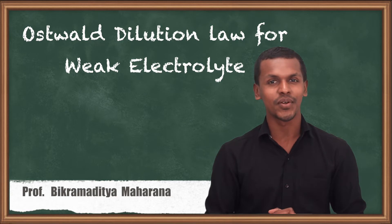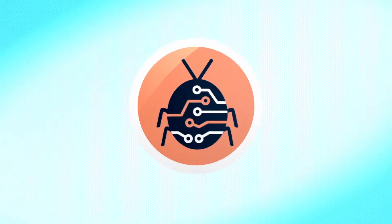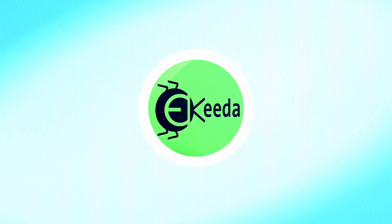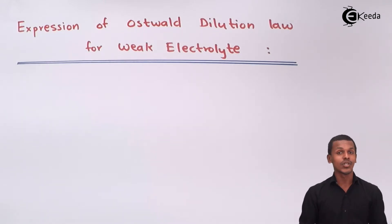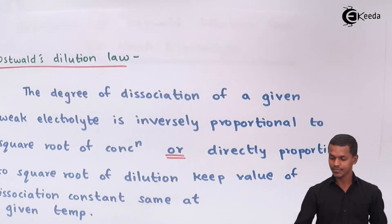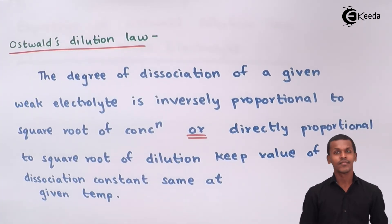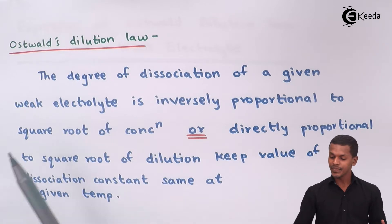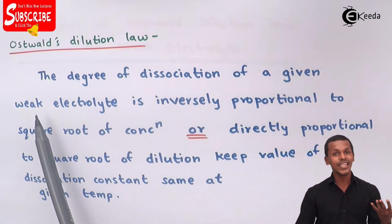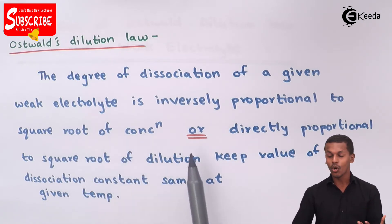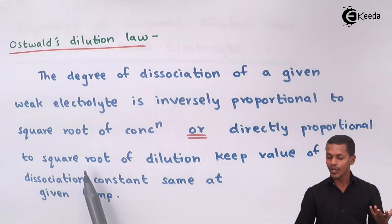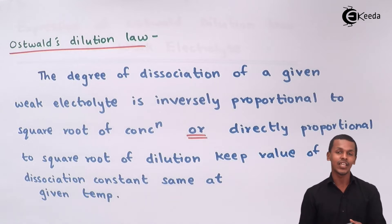But what is actually Oswald Dilution Law? So let us learn about this in this section. The Oswald Dilution Law states that the degree of dissociation of a weak electrolyte is inversely proportional to the square root of the concentration, or we could say that it is directly proportional to the square root of the dilution, keeping the value of the dissociation constant the same at the given temperature.